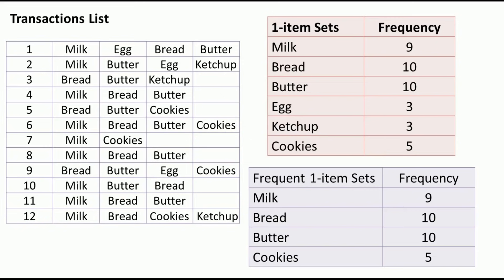Since 3 divided by 12 equals only 25 percent, any product appearing fewer than 4 times does not satisfy the minimum support. Egg and ketchup each appear only 3 times, so they are excluded. The remaining four items — milk, bread, butter, cookies — are the frequent one-itemsets.